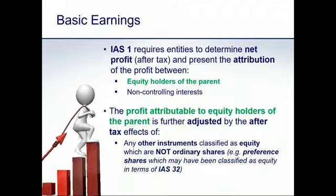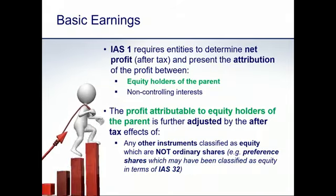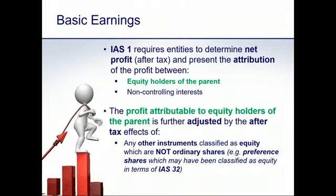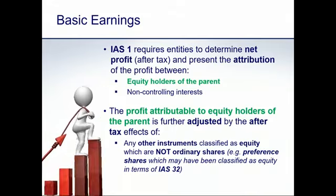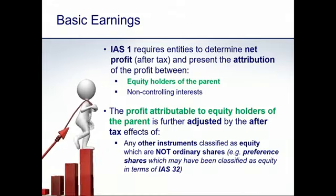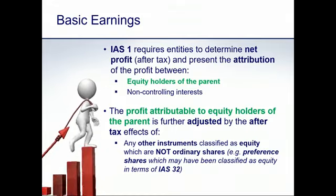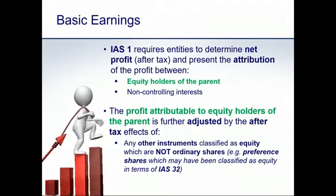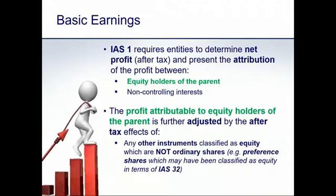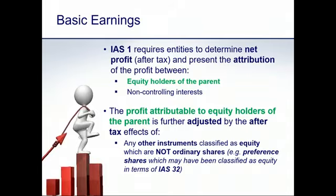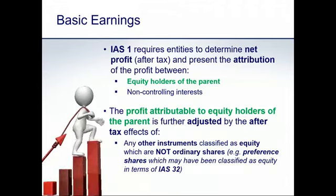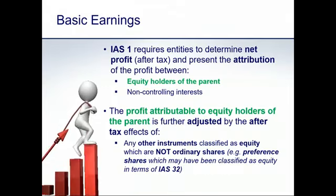Starting with basic earnings — IAS 1 requires that an entity determine net profit after tax and present an attribution of that net profit between equity holders of the parent entity and non-controlling interests. The portion attributable to equity holders of the parent is highlighted. We then take that profit and adjust it further by deducting any effects relating to non-ordinary shareholders, such as preference shares classified as equity under IAS 32 but not ordinary shares themselves.